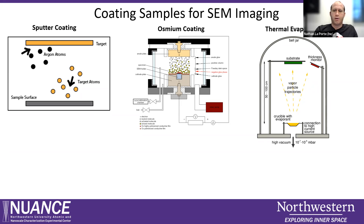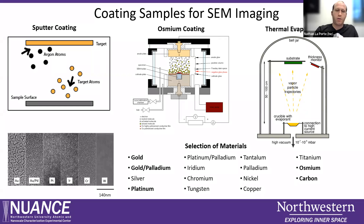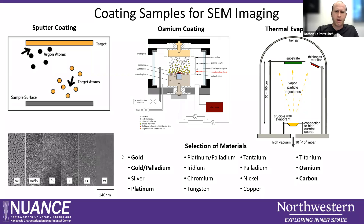Similar to the sputter coater, the thermal evaporator is not going to give you a coating around all the sides of your sample — it's basically going to coat the face of your sample that is facing the crucible. So it's not a great choice if your sample is highly porous or has a lot of surface area or is a weird shape. What's nice about the thermal evaporator is it has the widest range of materials you can use, because basically anything that melts and evaporates you can use, and you don't have to buy a big, thick sputter target for hundreds or thousands of dollars — you can use a couple of pellets of whatever material it is. Carbon coating also takes place in the sputter coater machine, but it's actually a thermal evaporation of carbon using a pair of carbon rods. There's an electrical discharge between them that sprays off carbon particles everywhere, including on your sample.